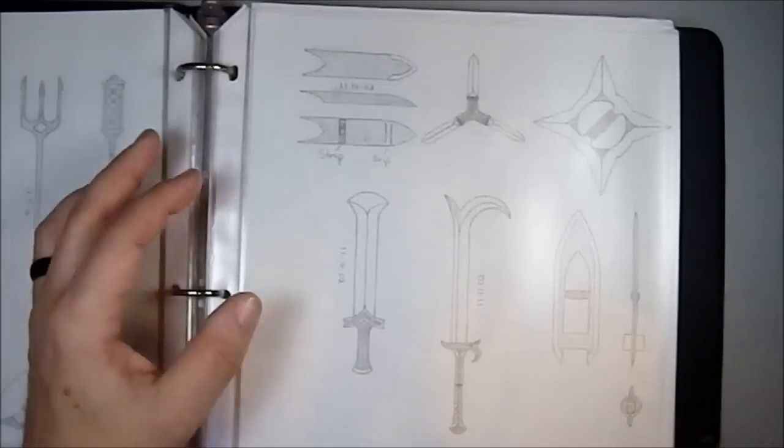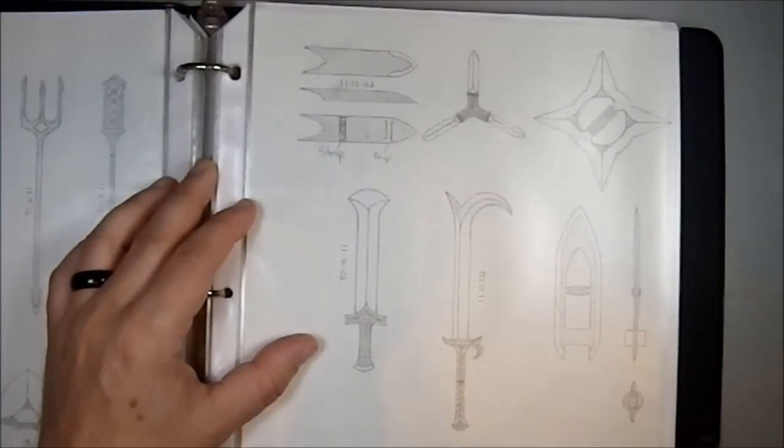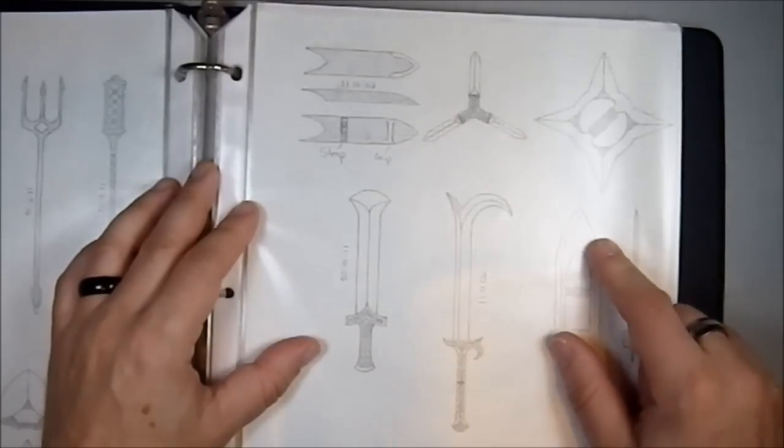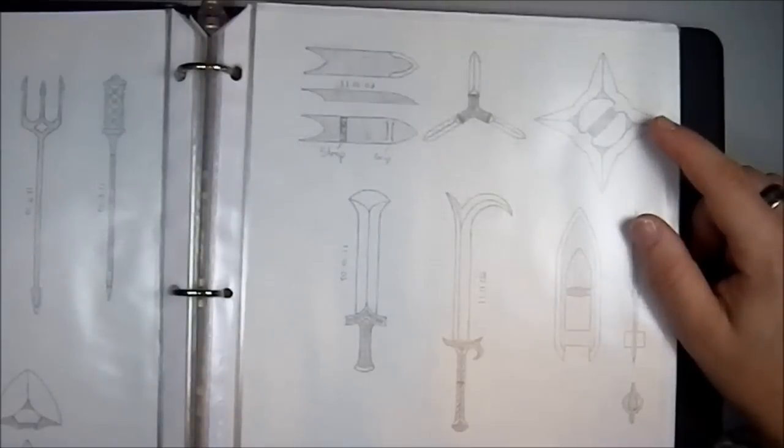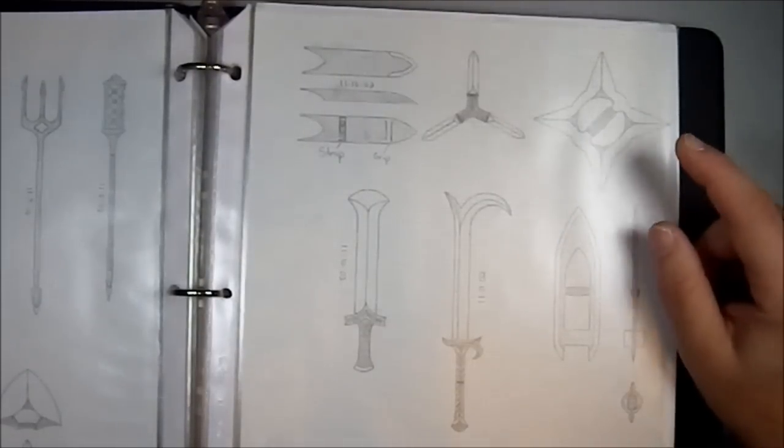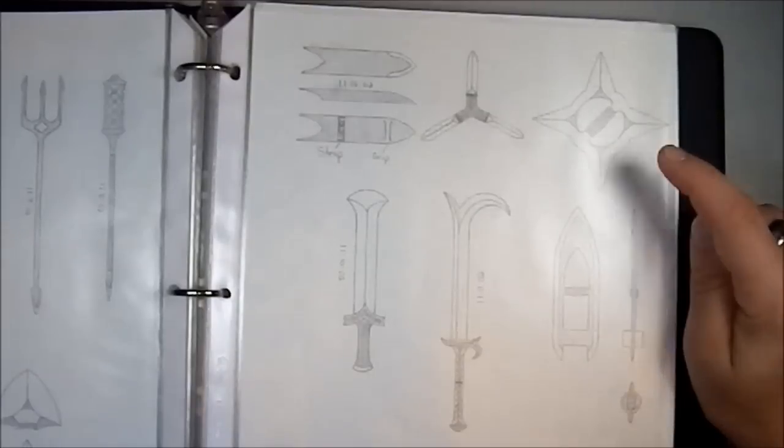We have a three-pointed throwing dagger, inspired by throwing stars, trying to take throwing stars into a larger category, making them more dangerous as a weapon. Making a throwing hand blade designed to be a very effective damaging weapon.